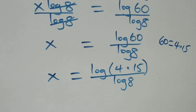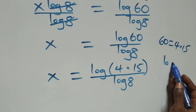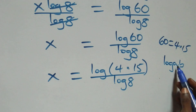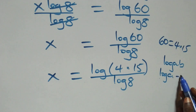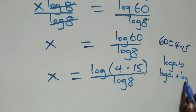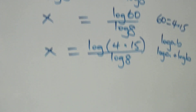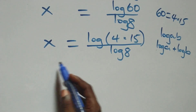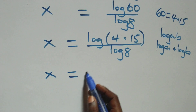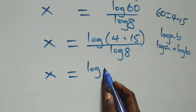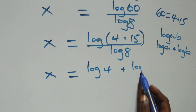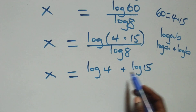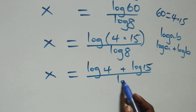This follows the product law of logarithm: when we have log(a times b), we can write it as log a plus log b. So all we have becomes x equals to log 4 plus log 15, all over log 8.